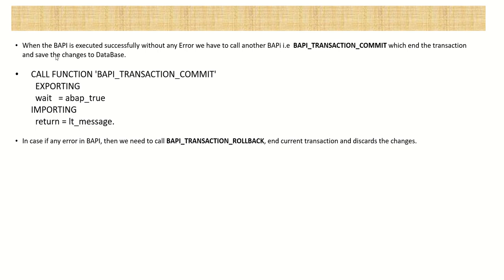Whenever the BAPI is executed successfully without any error, we have to call one more BAPI - BAPI_TRANSACTION_COMMIT - which will end the transaction and save the changes to the database. When we execute the main BAPI it buffers the data and does not update the database directly. After success, call BAPI_TRANSACTION_COMMIT for the changes to reflect. In case of error, to rollback all changes we call BAPI_TRANSACTION_ROLLBACK, which discards all changes.